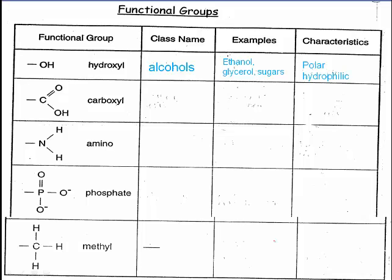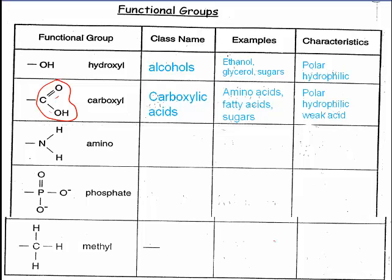The next functional group is the carboxyl group. You can see that there's a carbon double bonded to an oxygen, and then a hydroxyl group — this whole thing is called a carboxyl group. These you would find in carboxylic acids, things like amino acids, fatty acids, and sugars. They also tend to dissolve easily in water. They are polar and hydrophilic, and they also happen to form weak organic acids.